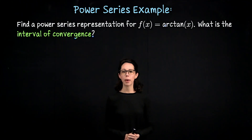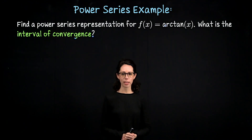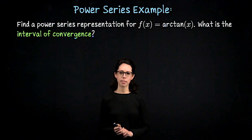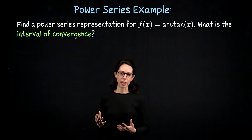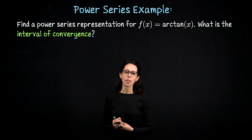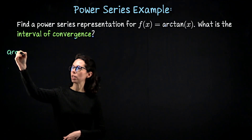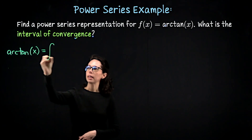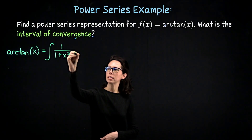In this video, we are going to find a power series representation for the function f of x equals arctan of x, centered at the origin. There are different ways we could do this, but here's how I would like to approach it. The derivative of arctan of x is a nice expression: it's 1 over 1 plus x squared. So we can write arctan of x as an antiderivative of 1 over 1 plus x squared dx.